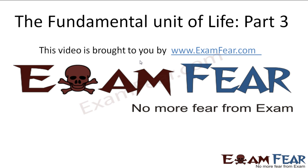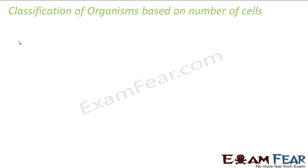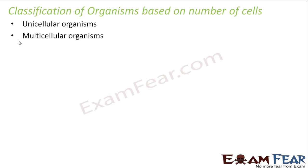This video on the fundamental unit of life part 3 is brought to you by examfear.com. Now let us look at the classification of organisms based on the number of cells. We broadly classify living organisms into two categories: unicellular organisms and multicellular organisms. This classification is based on the number of cells present in an organism.